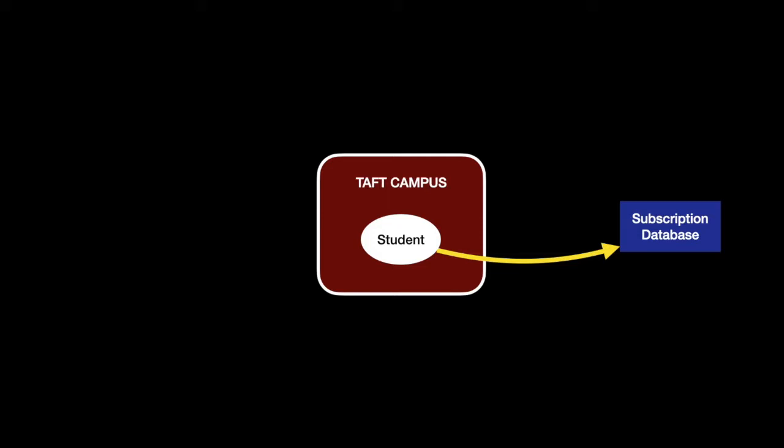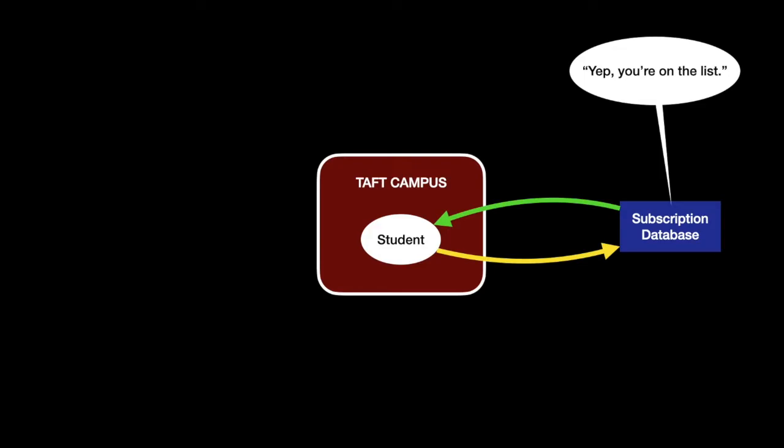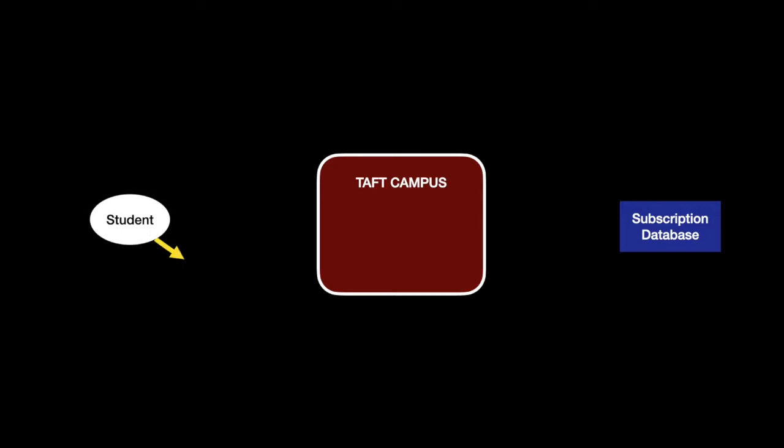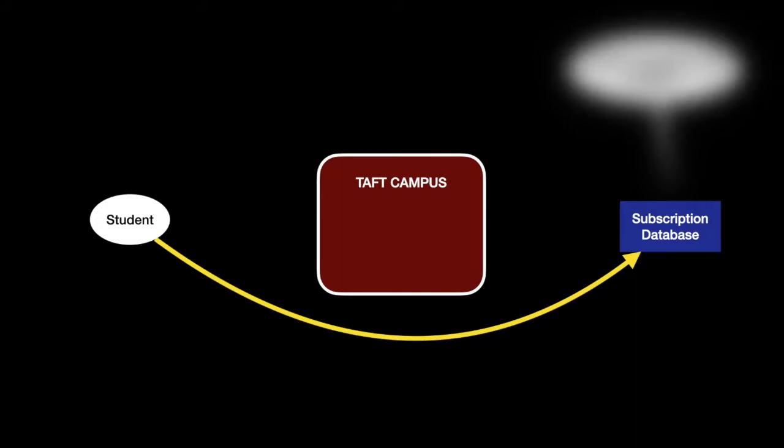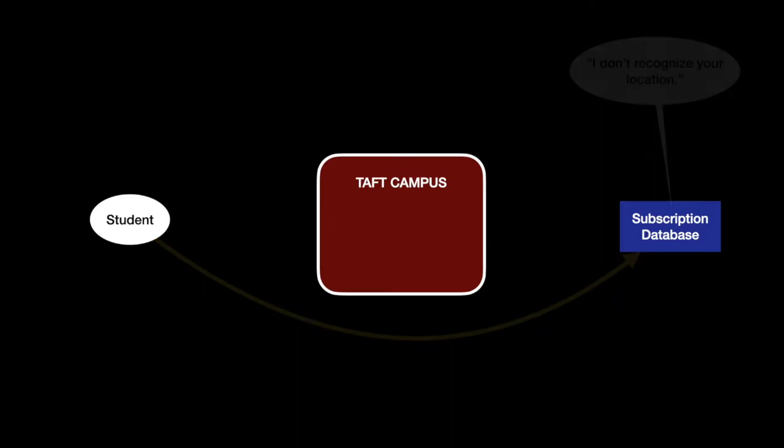Let's put a student on campus. If that student wants to access the subscription database, the database looks back and says, 'Oh yeah, I see you're on TAF's campus, you're on the list,' and passes information back. But what happens if we move that student off campus? The student tries to access the database, the database looks back, sees the student is not on campus, and says, 'I don't recognize your location,' and will not pass any information back.